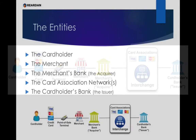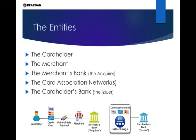The entities involved in approving a credit card transaction are the cardholder, the merchant, the merchant's bank — also known as the acquirer — the credit card association networks, and the cardholder's bank — also known as the issuer.